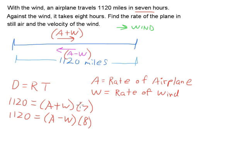Now let's distribute these real quickly, and we get 7A plus 7W equals 1120, and we get 8A minus 8W equals 1120. And just to save time and space, what I'm going to do is walk through, just paraphrase what the next step would be, and that is solving one of the equations for one of the variables.